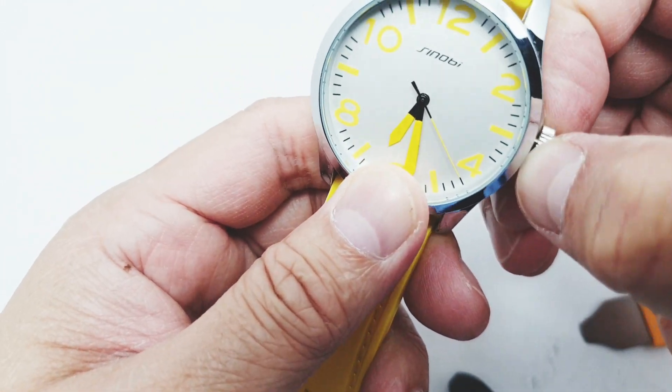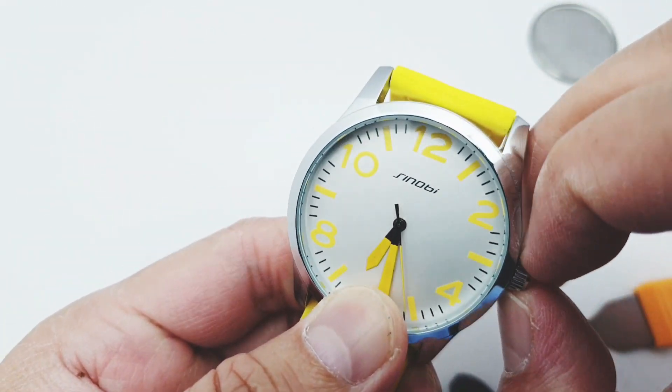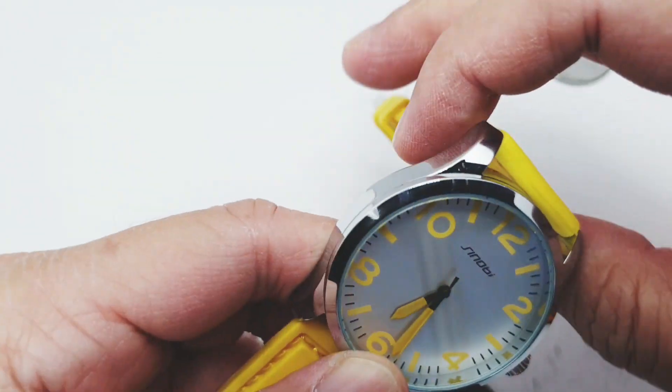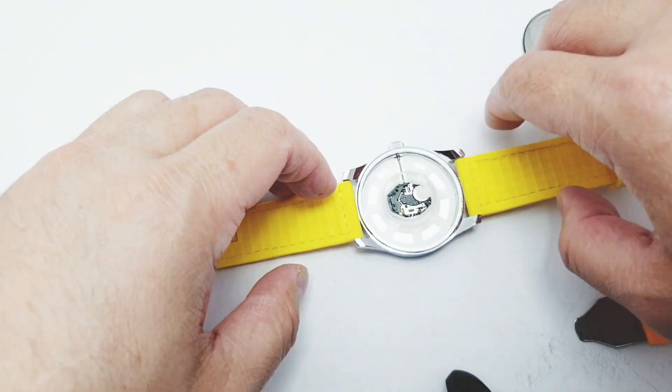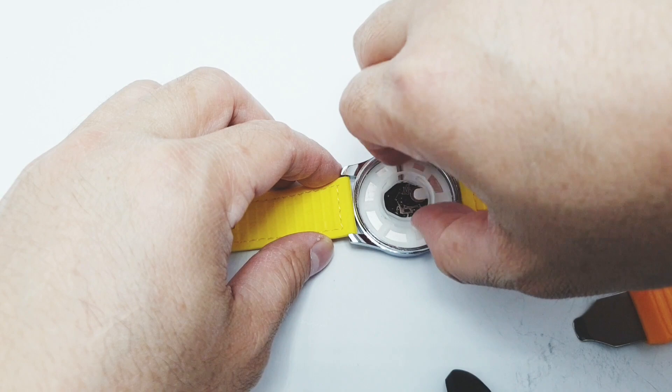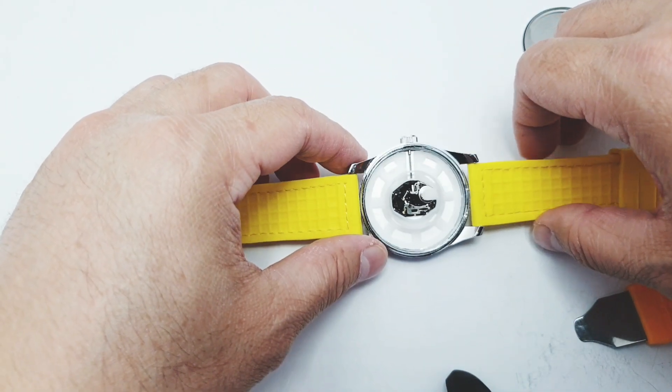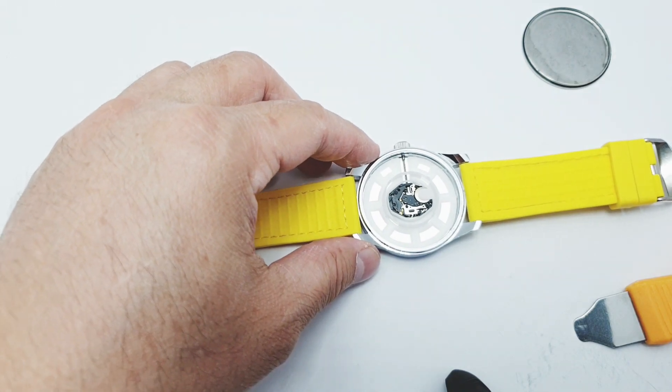It should stop the watch from moving but it doesn't, so I'm not sure why but I know that it has something to do with being a cheap watch, so this function is not properly working. It doesn't matter anyway, all we need to do is remove this plastic cover at the back so we can free the battery.